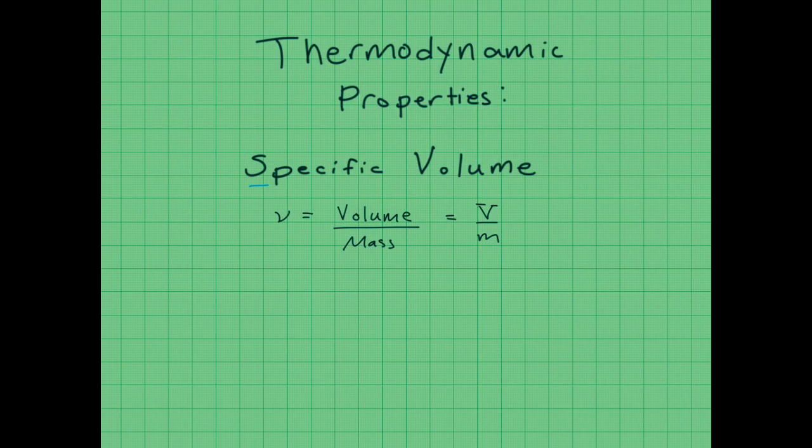So that is our definition of specific volume. It can have units of meters cubed per kilogram, centimeters cubed per gram, feet cubed per pound mass. Essentially, we just have units of volume in the numerator and units of mass in the denominator.